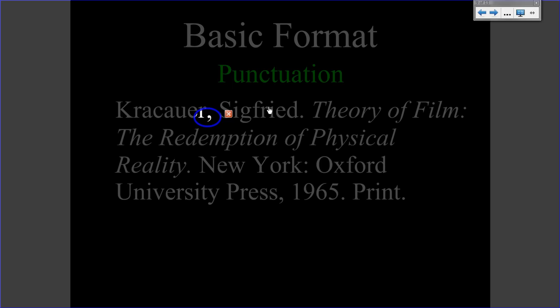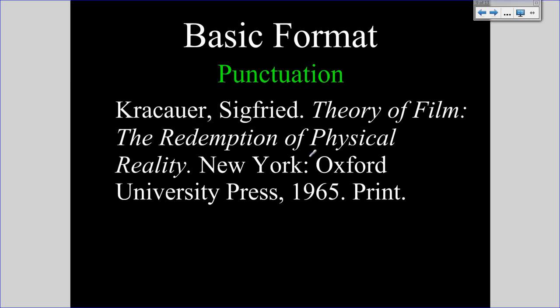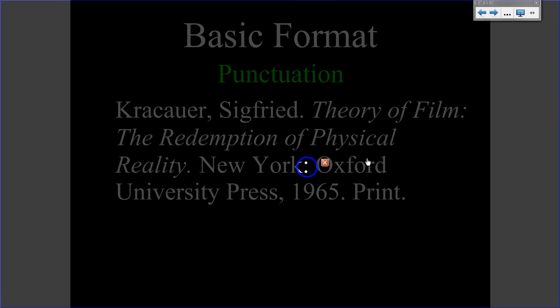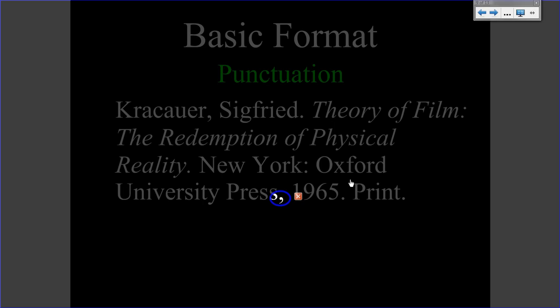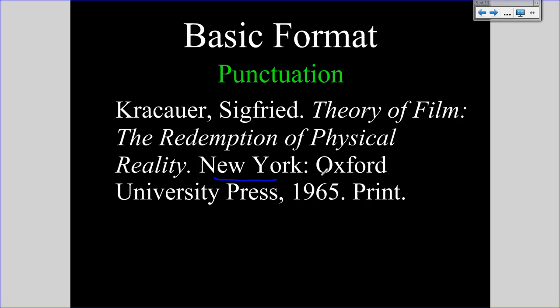You'll notice commas are used when a complete stop is not necessary. A comma between Krakauer and Siegfried indicates that these are two pieces of the same piece of information — we are just separating them because the last name is presented first. You can also see this when MLA separates the place of publication from the publisher; that information is considered joined in some way, but it needs to be separated still, so a colon is used. Finally, a comma is used between the publisher and the date of publication — a soft stop, joining place of publication, publisher, and date of publication all together, with full stops after the title and after publication information.